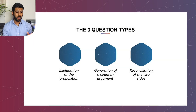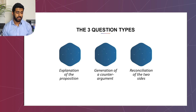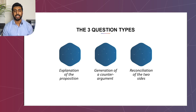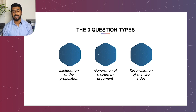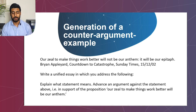There are three question types: explanation of the proposition, generation of a counter-argument, and reconciliation of the two sides. This is the fairly formal language they use, which essentially means: firstly, explain what the statement means; secondly, what is the counter-argument — the opposite viewpoint to the statement; and thirdly, thinking about marrying the two ideas together in support of the proposition.